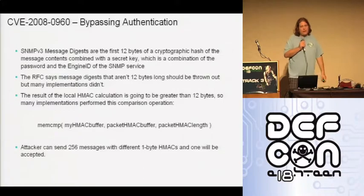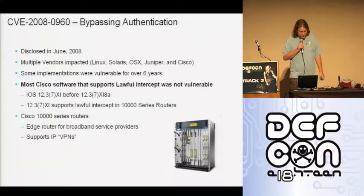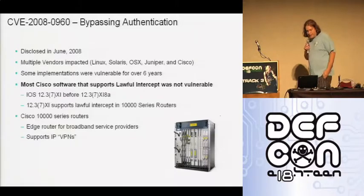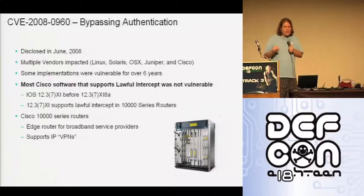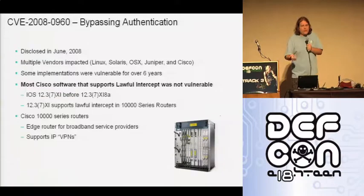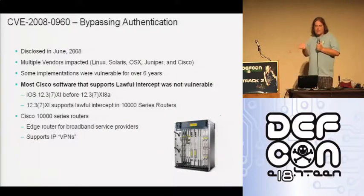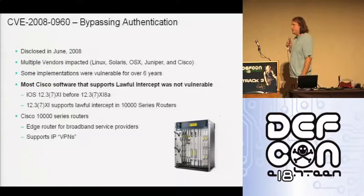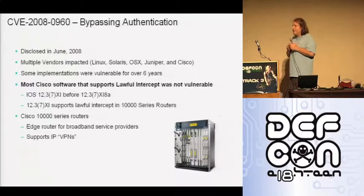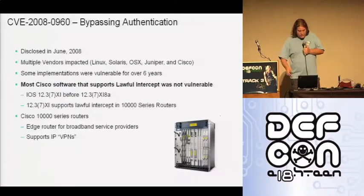In practice this means you send 256 requests — one for each possible byte — and one of them will be accepted. So you don't need the password. This was disclosed in June of 2008 and impacted a bunch of different vendors. Interestingly, a lot of the IOS software trains that support lawful intercept were never vulnerable to this vulnerability, and both the vulnerability and lawful intercept have existed in IOS version trains for many years. Cisco had two source branches — one had the bug, one didn't. I did find one version that had both the bug and the feature. The Cisco 10000 series router supports this particular version train of IOS and had both the vulnerability and the lawful intercept feature.